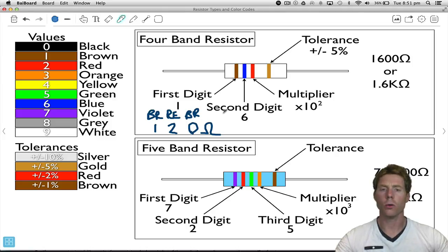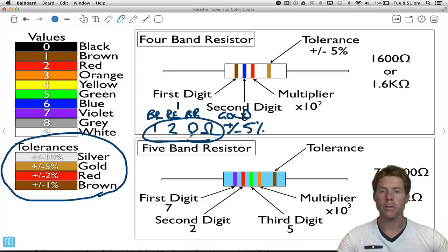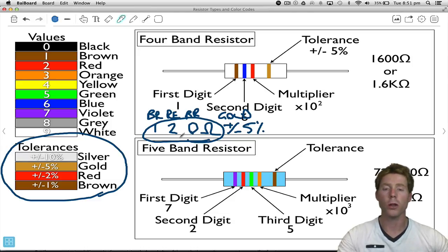Now, it also had a gold band. The gold band, we need to look down here for our tolerance. A gold band represents plus or minus 5%. So the actual resistance of this thing with a tolerance of 5% could be 5% above 120 ohms or 5% below 120 ohms.